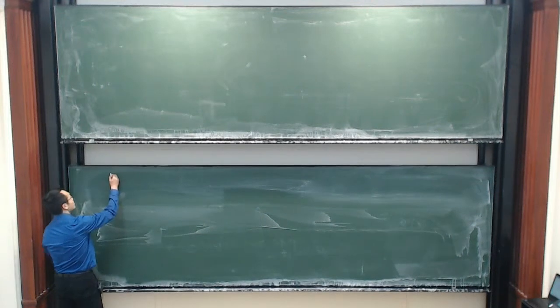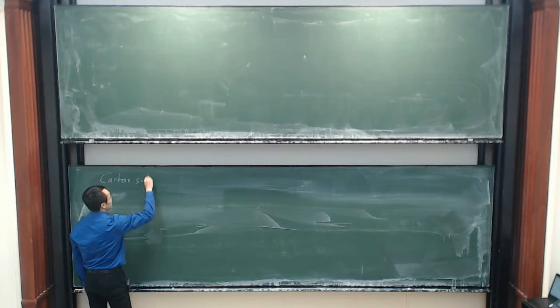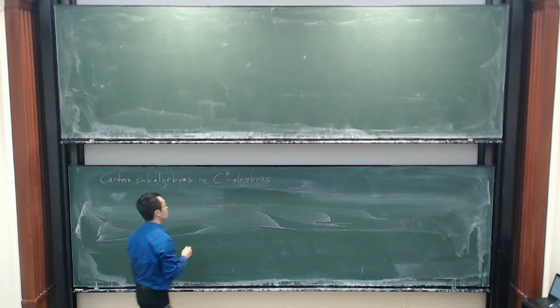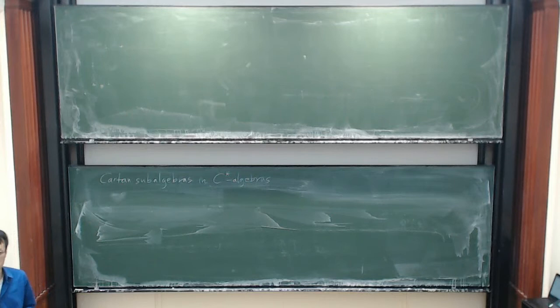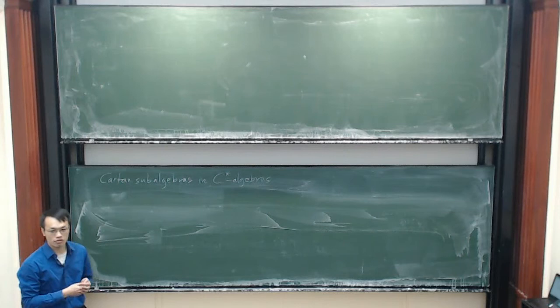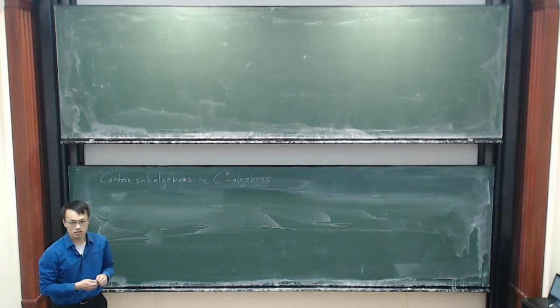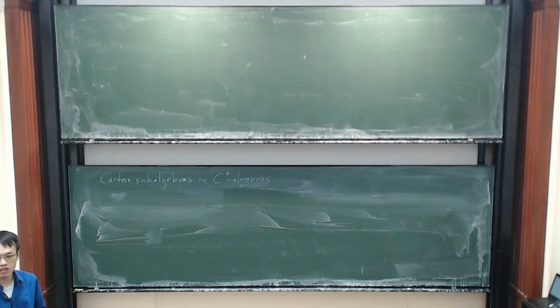I would like to talk about Cartan subalgebras and C*-algebras. The goal for the talk is to advertise this notion of a Cartan subalgebra in the C*-algebraic context. This notion is due to Kumjian and Renault, and the motivation actually comes from von Neumann algebras. I would like to explain why this notion of a Cartan subalgebra is interesting — for instance, if we want to connect operator algebras and dynamical systems, but also it could be interesting for classification of C*-algebras.